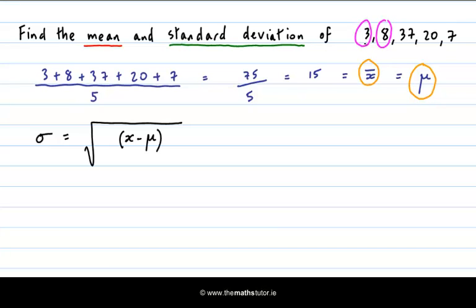In the case of 3, 3 is our x value and 15 is our μ. So 3 minus 15 is minus 12. So our deviation in this case is minus 12. However, the formula says that we square all of these deviations. So minus 12 when we square it gives us 144.